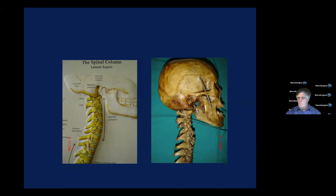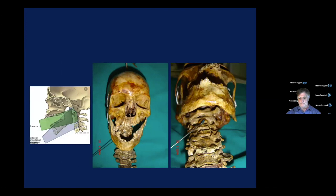The easiest cervical spine levels to reach at any time are C4, C5, and C6. From C3 above it is a little difficult because you have the jaw, the pharynx, and the larynx. It looks difficult but it is not — it is very simple. Reaching C1, C2, and C3 becomes more important because a lot of diseases occur in that region, so we need to know this approach.